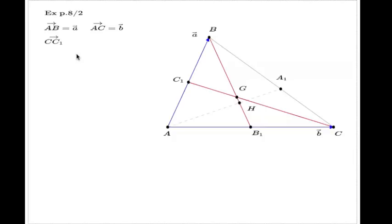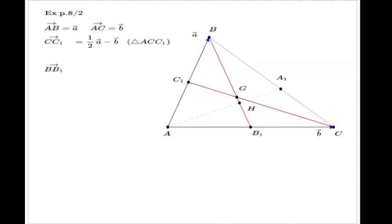Actually, CC1 means C1 is the endpoint, so you subtract the other way around. It comes out to one half of a, because the median line takes B — and that comes from triangle ACC1. What about BB1? Similar trick: half of this long vector, subtract the complete a vector. So it's one half b minus a. That comes from triangle ABB1.